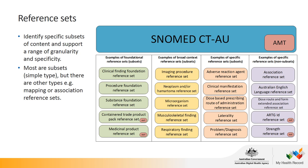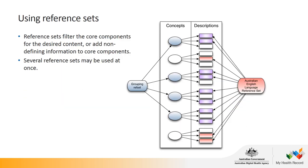The biggest type are the foundational reference sets, which comprise all concepts within a top-level hierarchy. For example, the container trade product pack reference set groups all container trade product pack concepts and allows them to be used for a particular purpose, such as binding to a drop-down box. On the right are non-subset types of reference sets, such as the ARTG ID reference set which maps the ARTG ID from the TGA to a container trade product pack, and the strength reference set which provides the normalised strength for each product. Reference sets filter the core components for desired content — one way to think of them is as an index that helps you find content, or as adding non-defining information to core concepts.